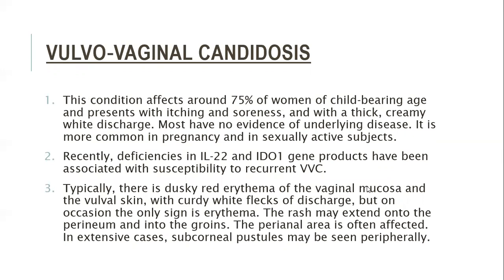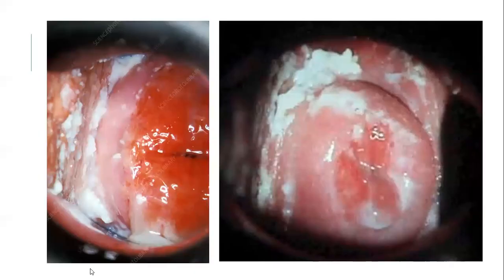Vulvovaginal candidiosis affects around 75 percent of women of childbearing age and presents with itching and soreness with thick creamy white discharge (leukorrhoea). Most have no evidence of underlying disease. It is more common in pregnancy and in sexually active females. Recent deficiencies in interleukin-22 and IDO1 gene products have been associated with susceptibility to recurrent vulvovaginal candidiasis. Typically there is a dusky red erythema of the vaginal mucosa and vulval skin with curdy white flecks of discharge, but on occasion the only sign is erythema. The rash may extend onto the perineum and into the groin; the perianal area is often affected, and in extensive cases sub-corneal pustules may be seen at the periphery.